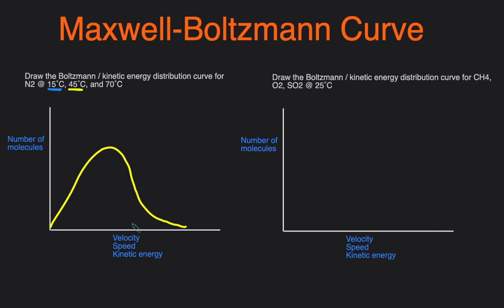So we're going to shift the graph to the left, but simultaneously we have to make the curve higher. The reason is that the area under the curve represents the total number of molecules, and that number has to stay the same. So if we make the curve narrower, we have to make it taller to maintain the same area. That's how the distribution curve looks at 15°C.